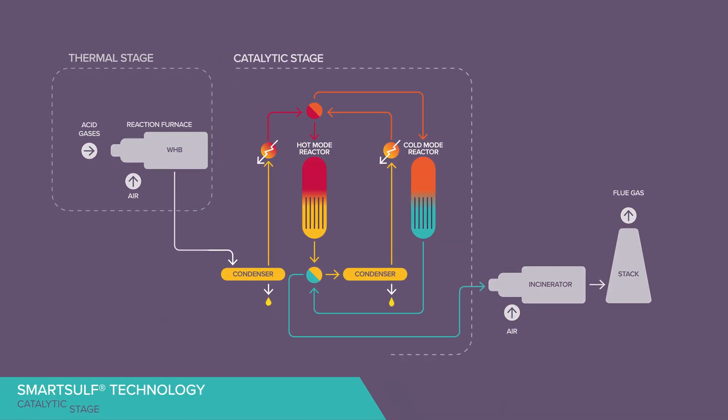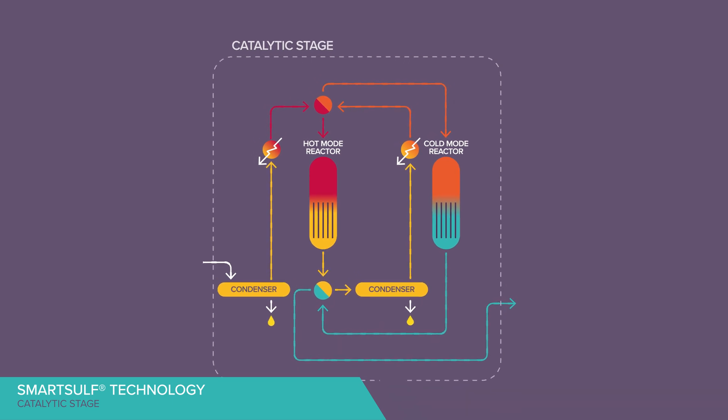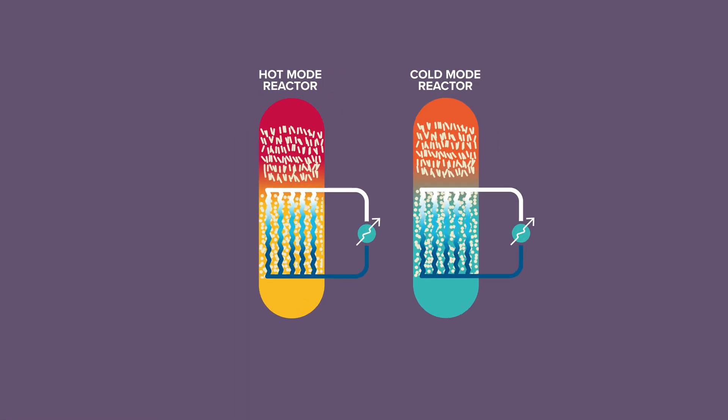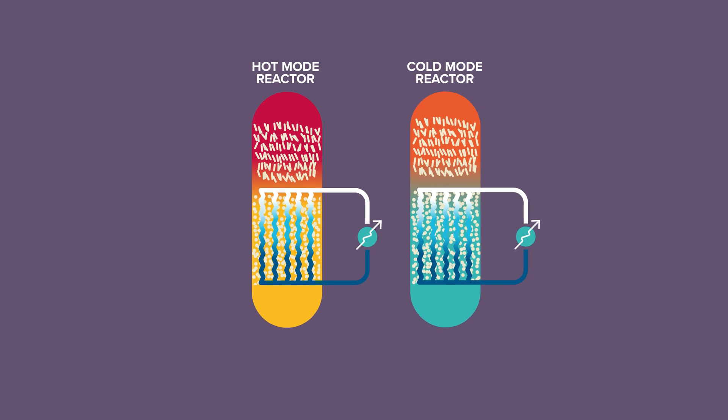Second, a catalytic stage replaces the entire Klaus plus tailgas treatment unit system by two permutable catalytic reactors with integrated heat exchangers.